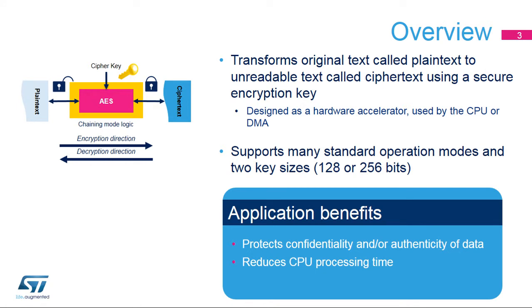The AES algorithm is a symmetric block cipher used to encrypt and decrypt information using a secret cryptographic key that is 128 or 256 bits long. Encryption converts data to an unintelligible format called ciphertext, while decrypting converts the ciphertext back to its original format, called plaintext. The AES peripheral is a NIST FIPS 197-compliant implementation of the AES algorithm, more efficient than a software library in terms of processing time.